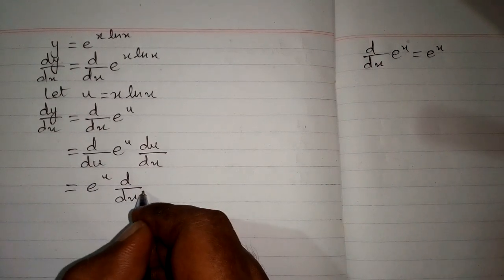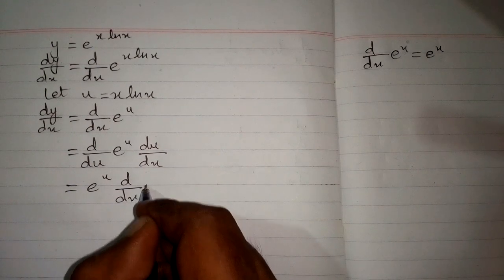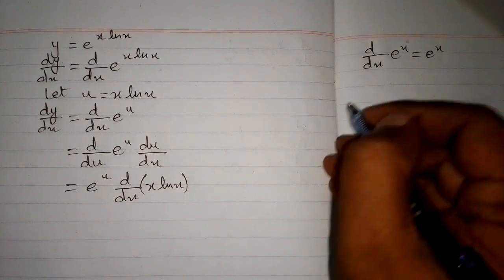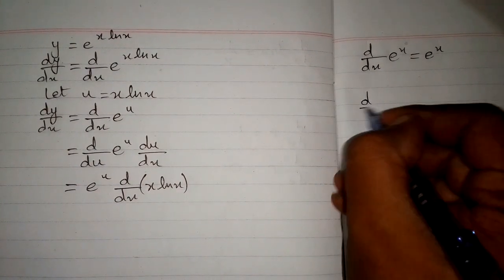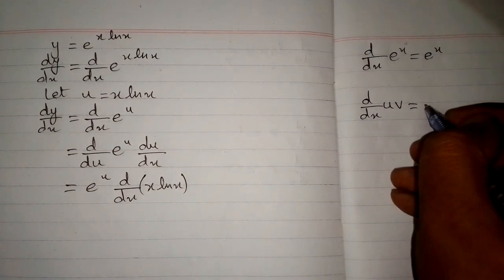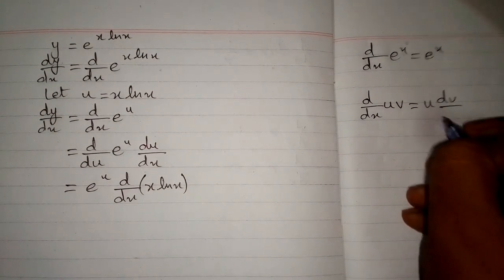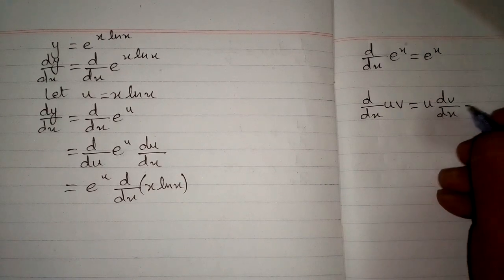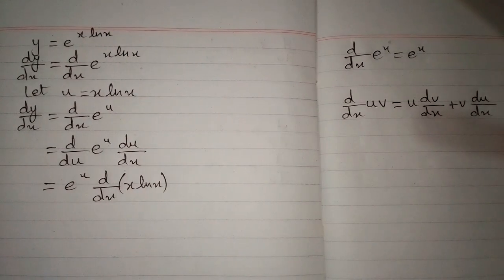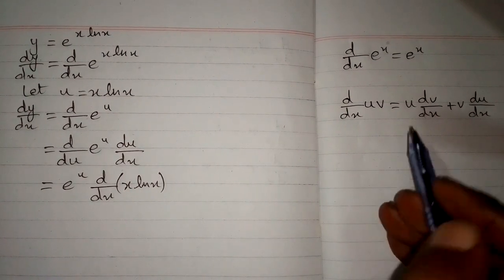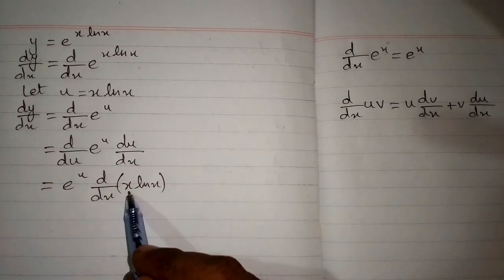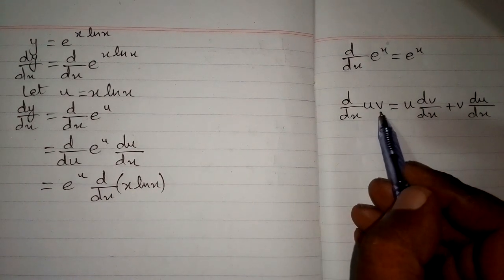Now multiply it by the derivative of u, which is x times ln of x. We know that the derivative of a product u times v is equal to u times the derivative of v, plus v times the derivative of u. We can apply this formula here, where we have x in place of u and ln of x in place of v.